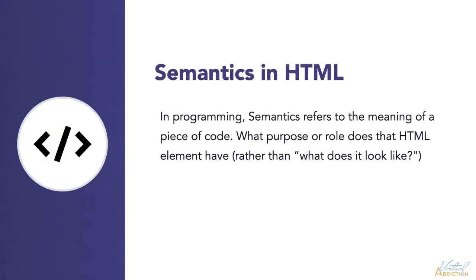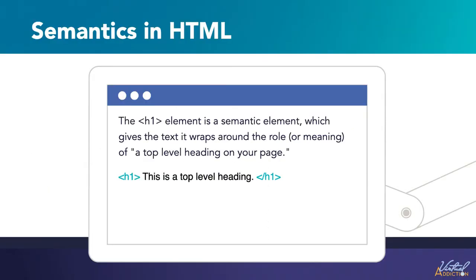In programming, semantics refers to the meaning of a piece of code — what purpose or role does that HTML element have, rather than what does it look like? In HTML, an H1 element is a semantic element. It gives the text that it wraps around the role or meaning of a top-level heading on the web page. By default, most browsers will style an H1 with a large font size and make it bold to make it look like a heading. Once we learn CSS, we can style this to look like anything we want, but for right now we're just going to concentrate on the built-in browser styling.